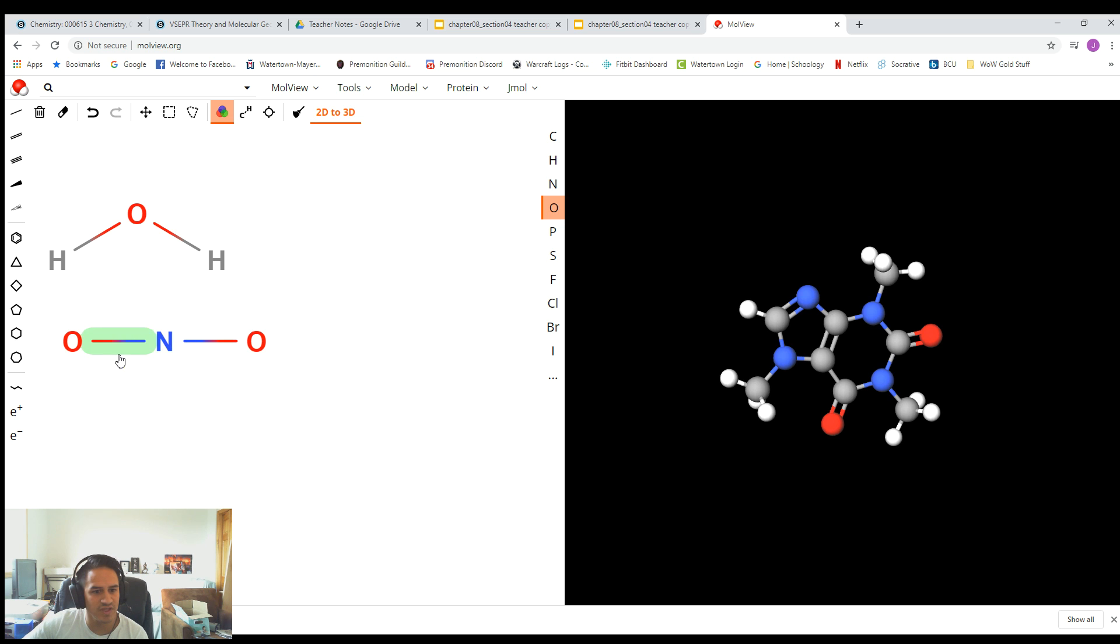So if we wanted to make one of these lines a double line, here on the side there's some different options. We can click on it here. And I believe if we just click the double and then we click on it here, it'll just turn it into a double bond. So if for some reason we wanted to make a double bond, we could.